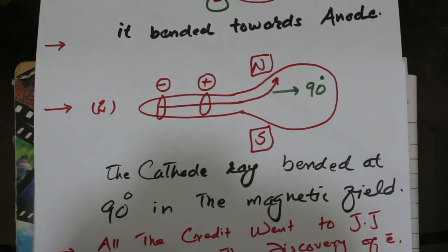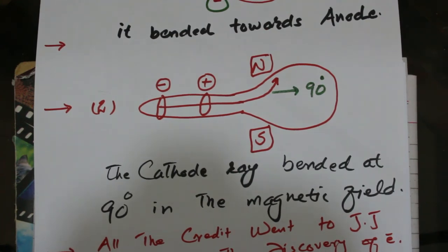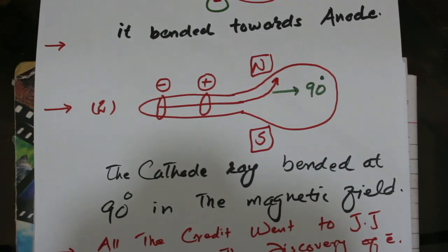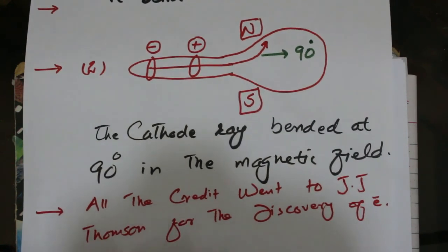Through both experiments, J.J. Thomson discovered the electron, and all the credit went to him for the discovery of the electron, despite the fact that all the groundwork was done by William Crookes, who discovered the cathode rays. Thank you for watching and see you in the next class.